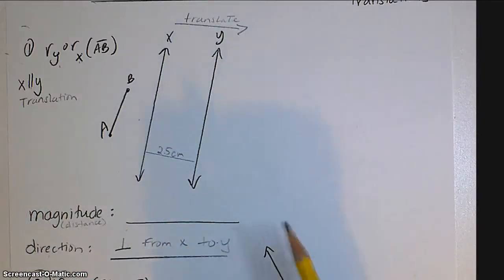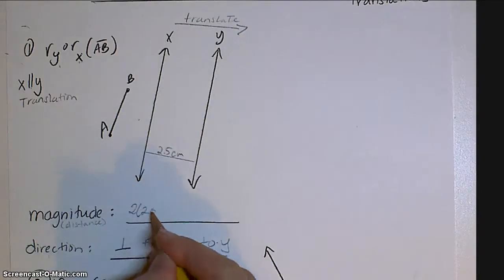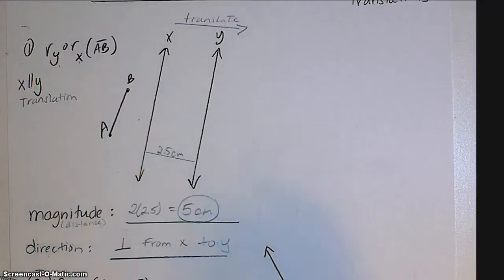So I know I'm going to take that distance and double it. So 2 times 2.5, that's going to give me a magnitude of 5 centimeters.